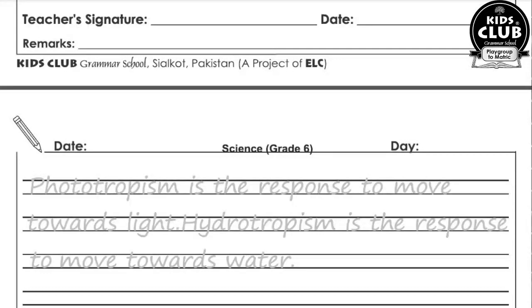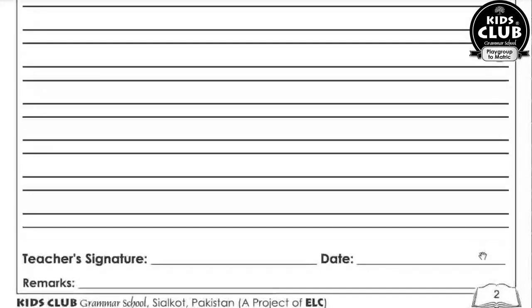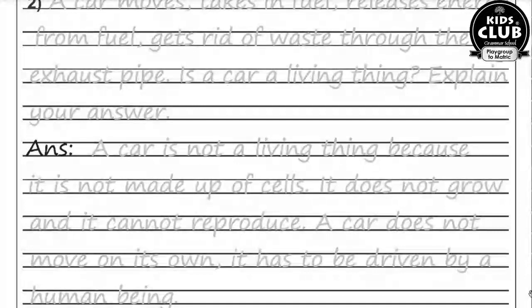Plant jab sun ki taraf grow karta hai, that is phototropism — jaise hamaari leaves hain, flowers hain, stem hai, ye sun ki taraf grow karte hain, they show positive phototropism. Hydrotropism is the response to move towards water. Hydro water se nikla hai — hydrotropism ka matlab hai jo cheez water ki taraf move hoti hai.